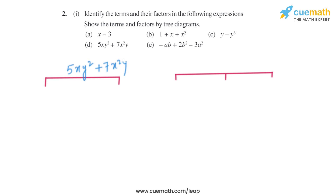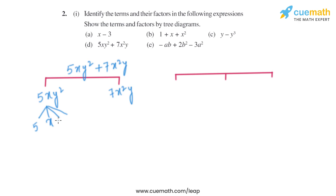Now let's move on to part D. The expression given is 5XY square plus 7X square Y. The terms are 5XY square and 7X square Y. The factors of 5XY square are 5, X, Y, and Y — as 5, X, and Y square (two Y's) can each divide it completely. Similarly, the factors of 7X square Y will be 7, X, X, and Y.